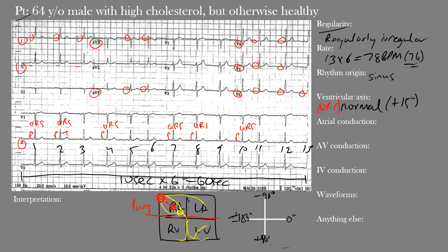To find the QRS axis, we typically use two leads. Lead I sits at 0 degrees and AVF at +90 degrees. Looking at lead I, the QRS complex is mostly positive, so we're heading toward the positive end — toward 0 degrees. Looking at AVF, the QRS complexes are also mostly positive, so we head toward the positive end of AVF as well. That puts us in the normal axis region. Normal axis lies from about -30 to +105 degrees; leftward axis deviation and rightward axis deviation lie outside this range.